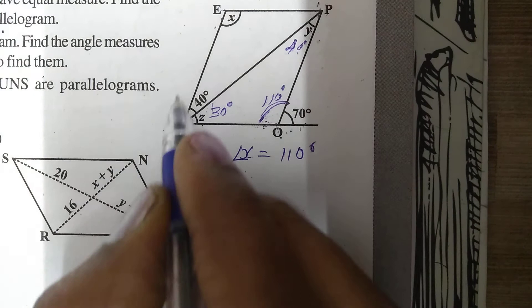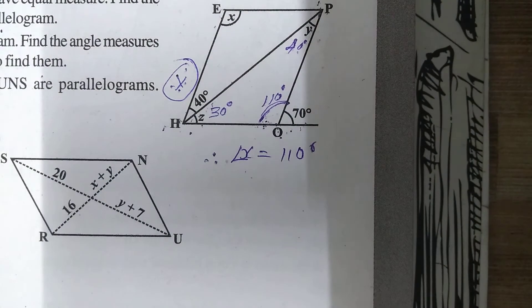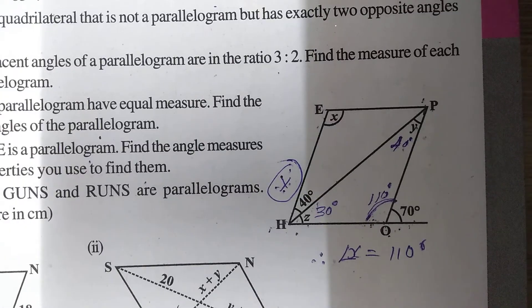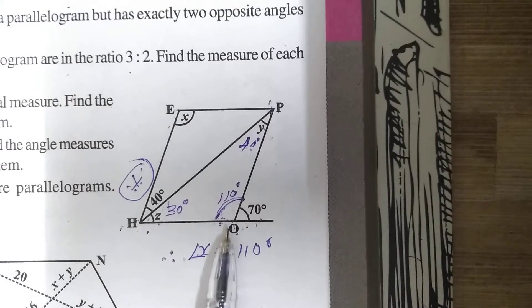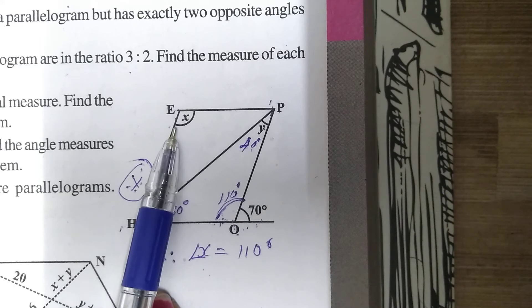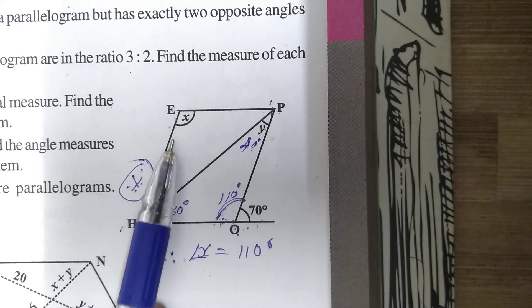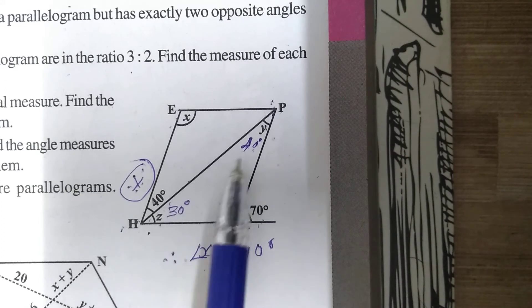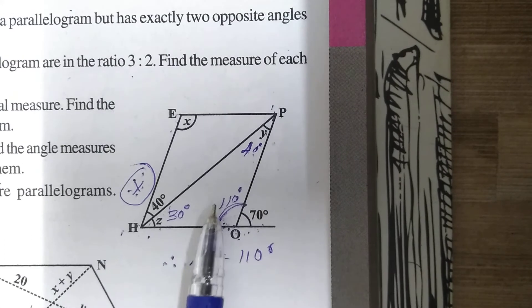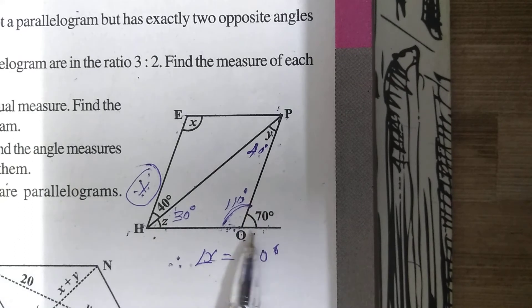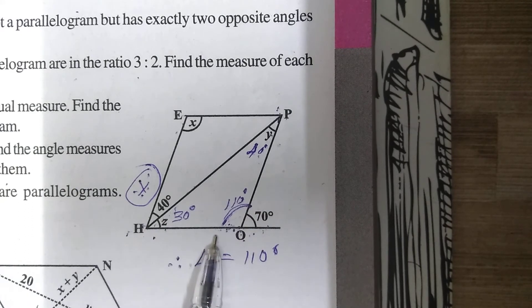This is a very important sum. We used linear pair, opposite angles of a parallelogram are equal, opposite sides are parallel, HP is transversal, and alternate angles are equal — using 3 to 4 conditions to find X, Y, and Z. Please mark it and practice it.